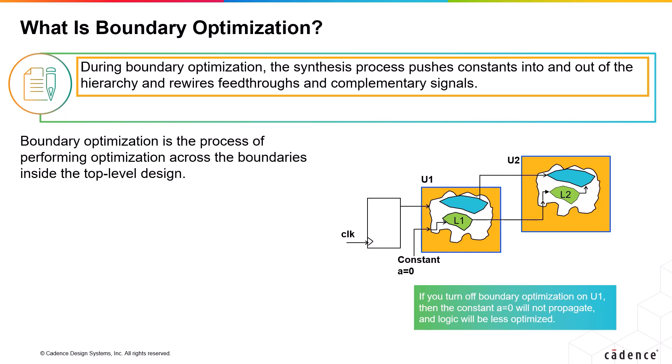Examples of boundary optimization include constant propagation across hierarchies, removing undriven or unloaded logic connected, collapsing equal and opposite pins, hierarchical pin inversion, and rewiring the equivalent signal across hierarchies.